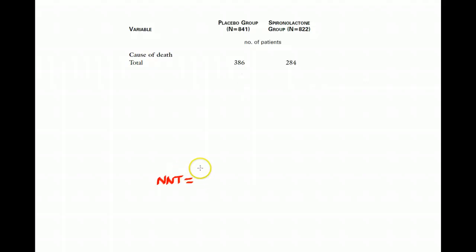So the formula for a number needed to treat is one, or the inverse, of the absolute risk reduction. So the first thing we're going to have to do is calculate our absolute risk reduction.